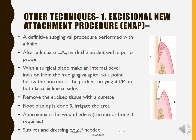There are other techniques and modifications to basic curettage. One is the Excisional New Attachment Procedure (ENAP). Unlike standard curettage done with curettes, ENAP is performed with a knife — an incision is given. This is a definitive subgingival procedure: after adequate local anesthesia, mark the pocket with a periodontal probe, then give an internal bevel incision from the gingival margin to a point apical to where the pocket ends, carrying it interproximally on both facial and lingual sides.